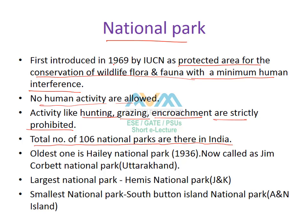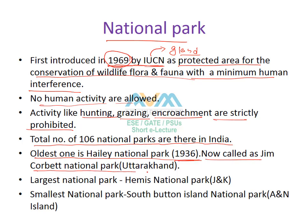There are a total of 106 national parks in India. The concept of the national park was introduced by the IUCN — the International Union for the Conservation of Nature — in 1969, and its headquarters is situated in Gland, Switzerland. The oldest national park in India is the Hailey National Park, constructed in 1936, now called Jim Corbett National Park in Uttarakhand. The largest national park is Hemis National Park in Jammu and Kashmir, and the smallest is South Button Island National Park in the Andaman and Nicobar Islands.